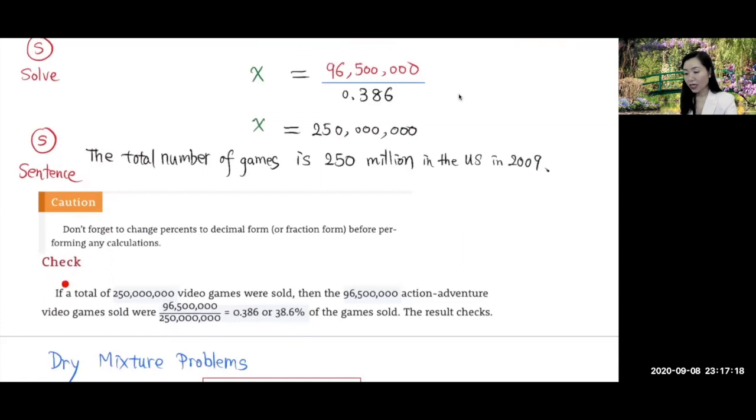Now at the end, you can check if the answer makes sense. If this is the total number of games, then the number of action adventure games is 96 million 500,000. Using this divided by the total, we got 0.386, which is 38.6 percent. So it agrees with what they said, right?